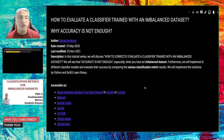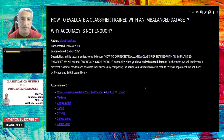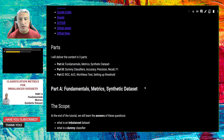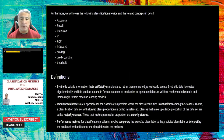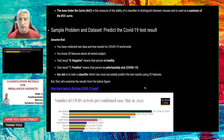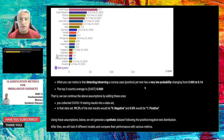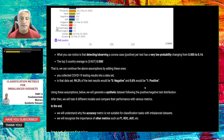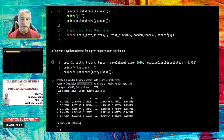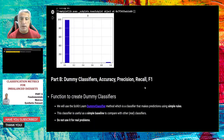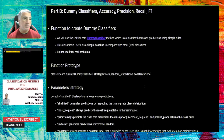Welcome back. This is Part B of the tutorial series on how to evaluate a classifier trained with an imbalanced dataset. In Part A, we already discussed the fundamentals and the important metrics. We already created our synthetic dataset using scikit-learn's make_classification method, and now we have reached Part B.